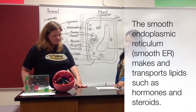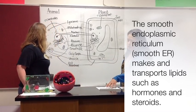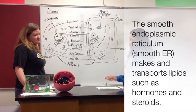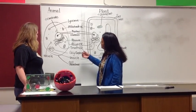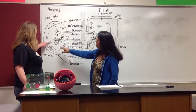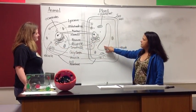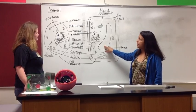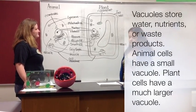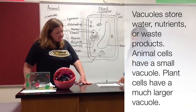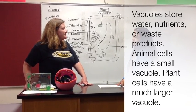The vacuole stores a variety of things such as water, nutrients, or waste products. Both the animal cell and the plant cell have vacuoles, but the plant cell vacuole is going to be much larger than the animal cell vacuole. They store things kind of like a storage unit.